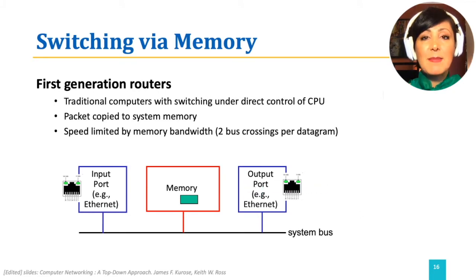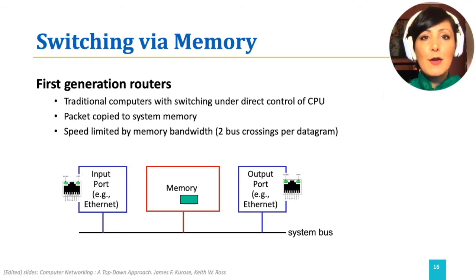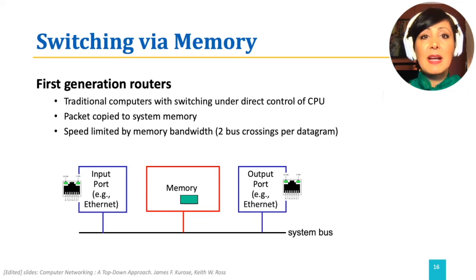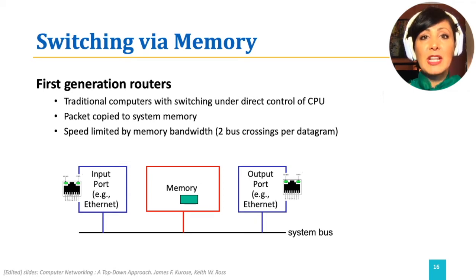In this method, if the memory bandwidth is limiting reads and writes of the packets to the memory to B packets per second, the forwarding throughput would be at most B divided by two packets per second. This is because the packet must be read to and from the memory in the process of going from the input port to memory and from memory to the output port.